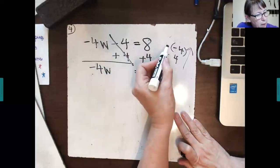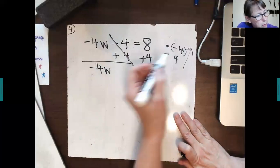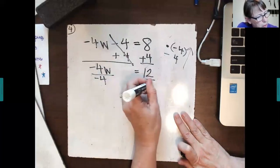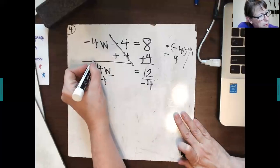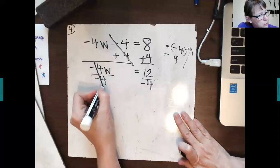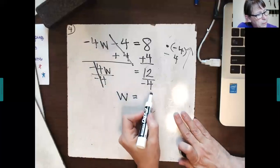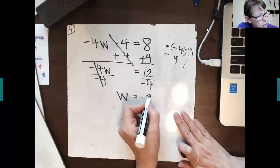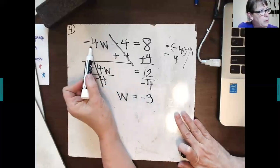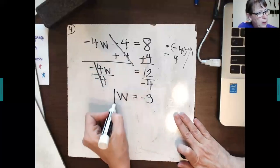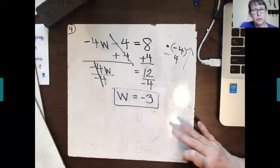Now, we're going to divide. Instead of multiply by negative 4, we're going to divide each side by negative 4. Negative 4 over negative 4 is 1. 1 times W is W. 12 divided by negative 4 is a negative 3. Let's try it out. Negative 4 times negative 3 is a positive 12. Well, positive 12 minus 4, yes, is 8. So, we have a correct solution.